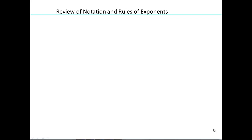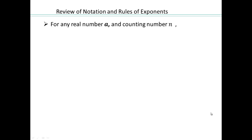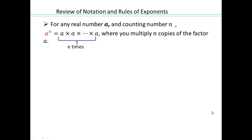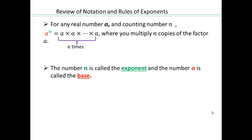Now that you know how to work with multiplying rational numbers and rational expressions, let's review what we know about base and exponents. Remember, a to the power n, where n is a whole or counting number, refers to a times a times a, n times, where n is called the exponent and a is called the base.